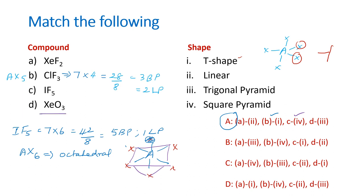Next, we go to XeO3. Xenon is having 8 electrons. Oxygen is 6. 6 threes are 18. 8 plus 18 will add up to 26, 26 by 8. 8 times 3 is 24, so 3 bond pairs plus 1 lone pair. XeO3 is of the type AX4. AX4's parent geometry is tetrahedral.